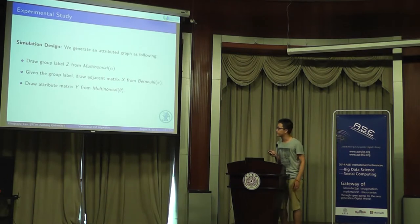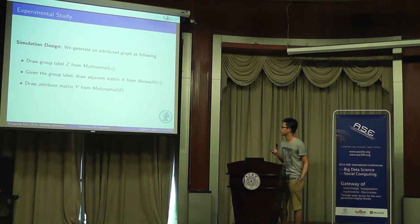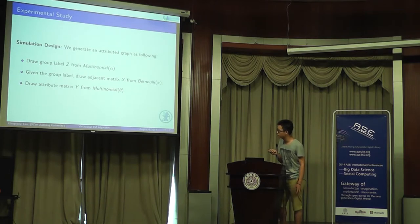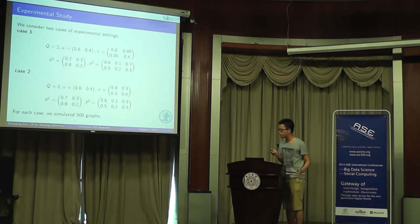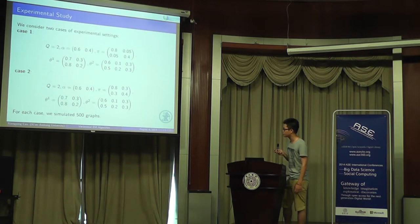Next is the experimental study. First is simulation design. We generate an attributed graph as follows: First, we draw group label Z from a multinomial distribution. Then given the group label Z, we draw adjacency matrix X from the Bernoulli distribution, and then draw attribute matrix Y from multinomial distribution. For the simulation, we consider two cases of experimental settings: case 1 and case 2. For each case, we simulated 500 graphs.